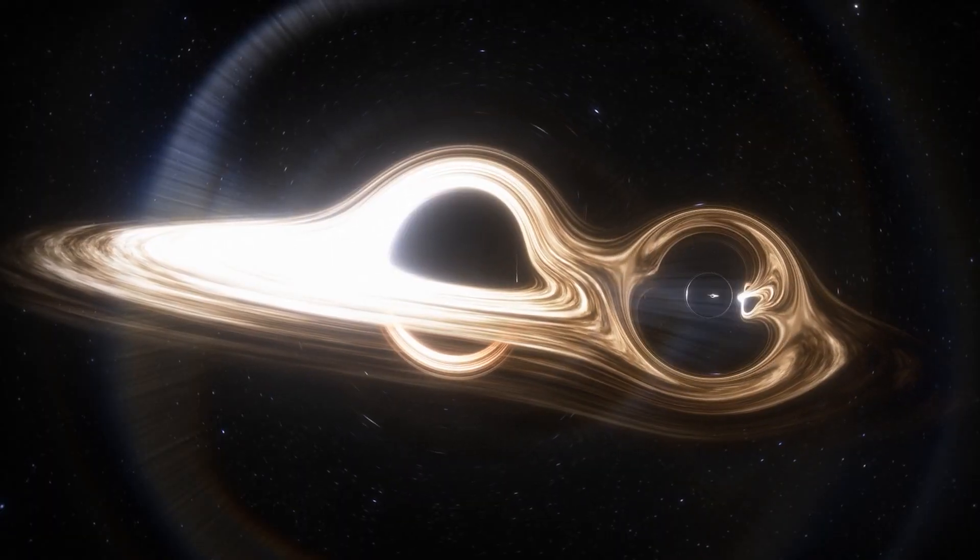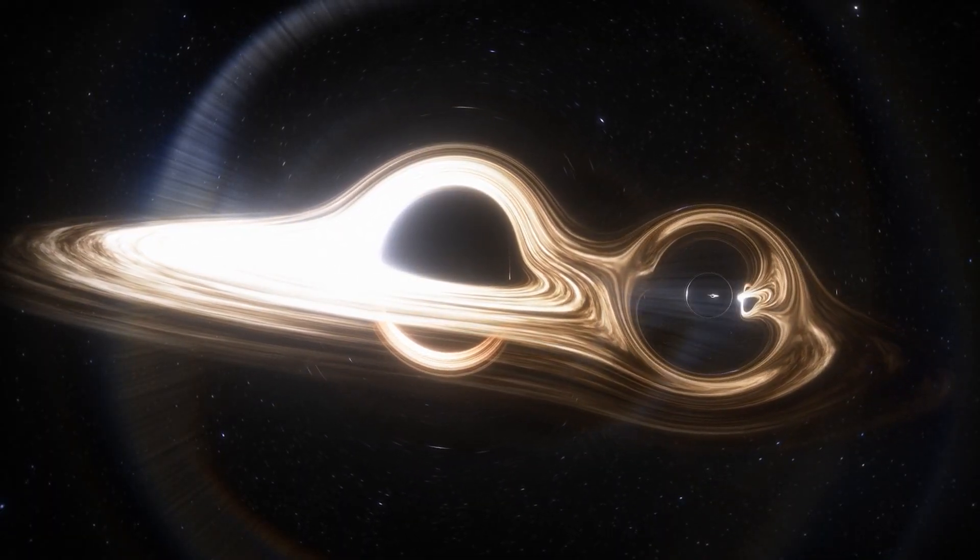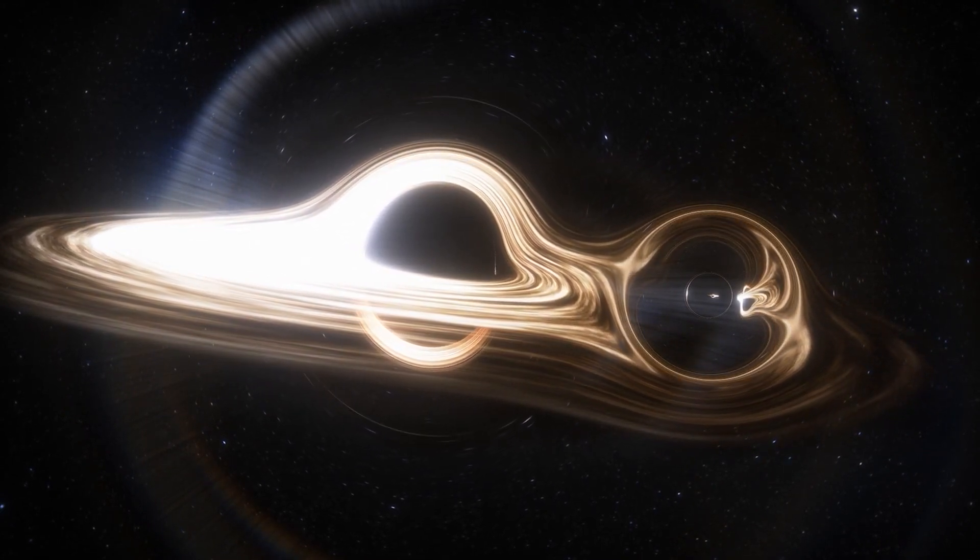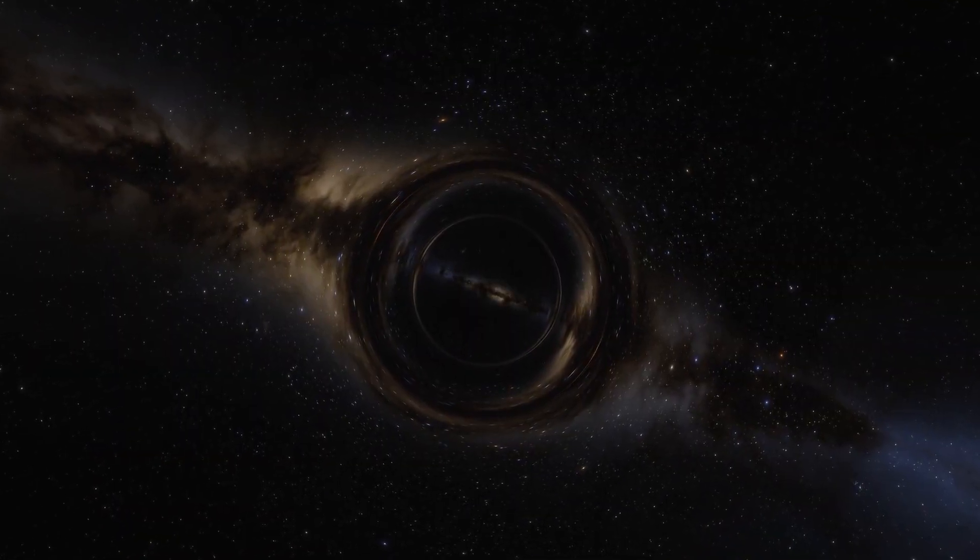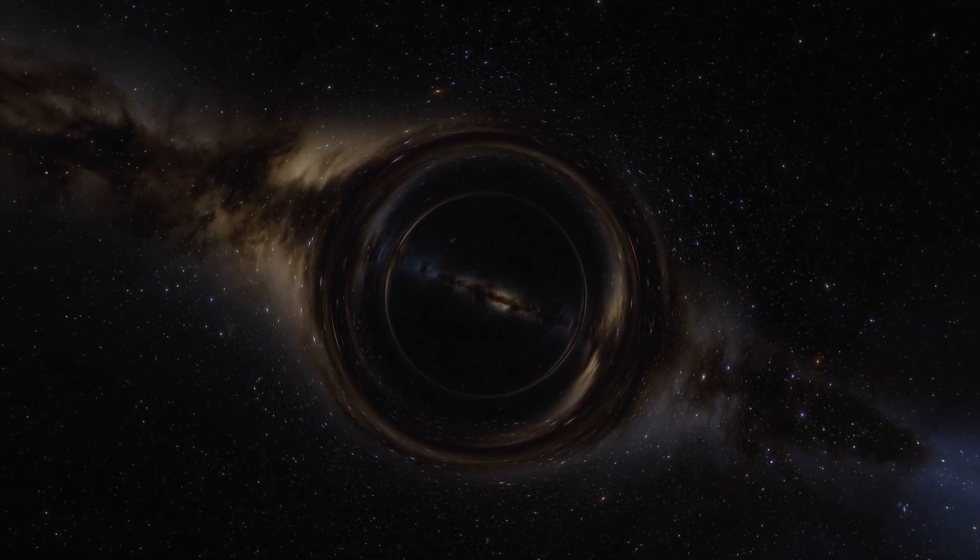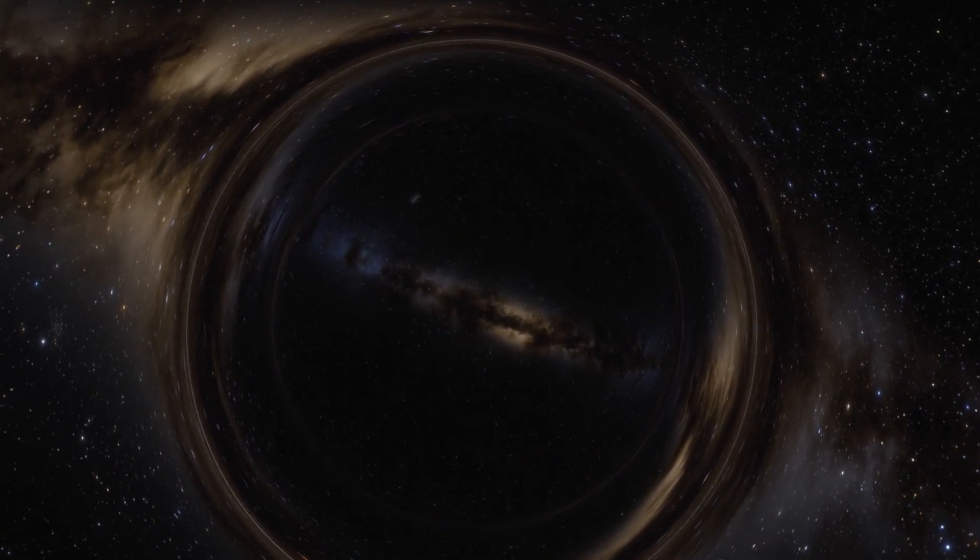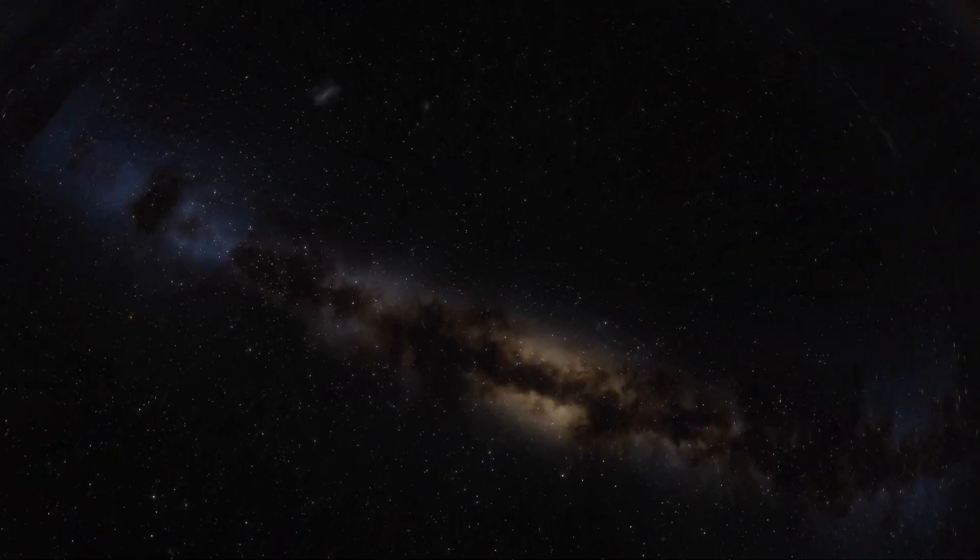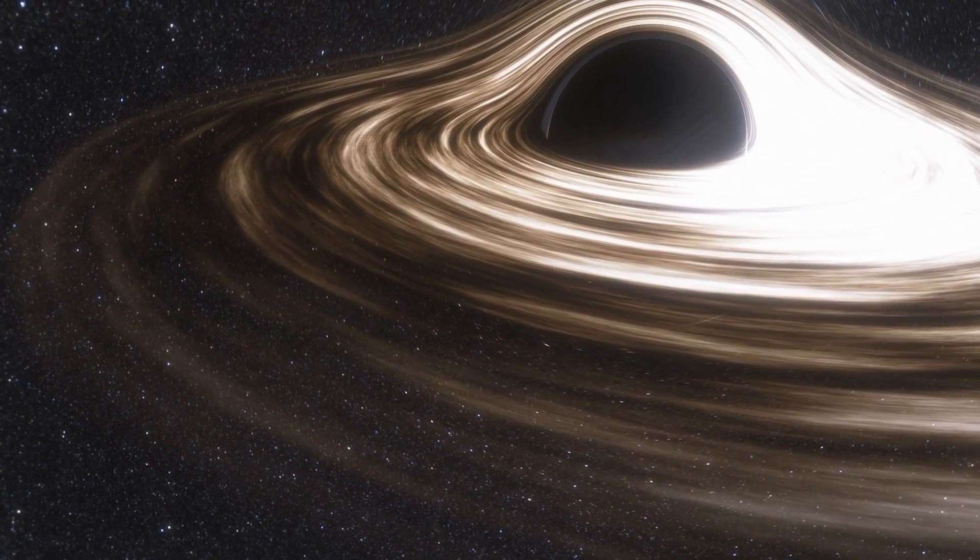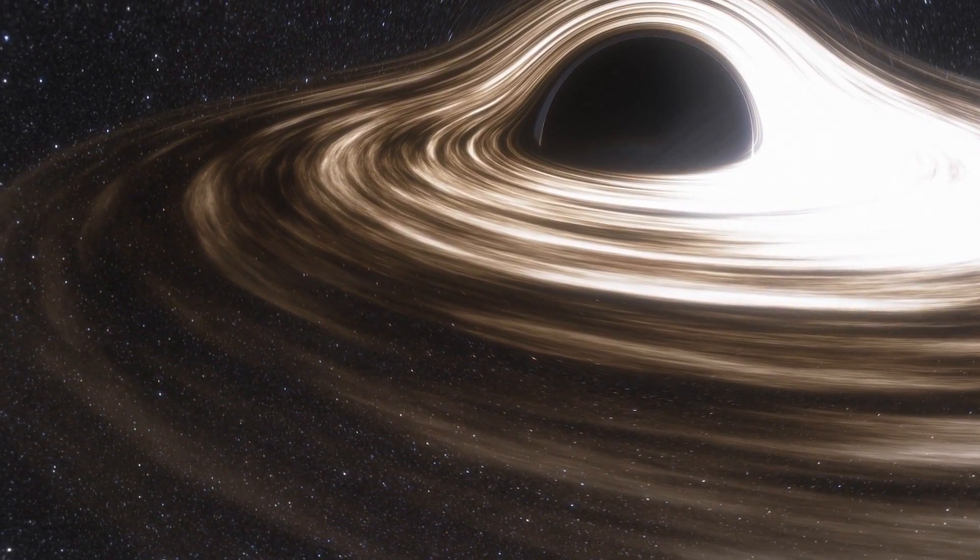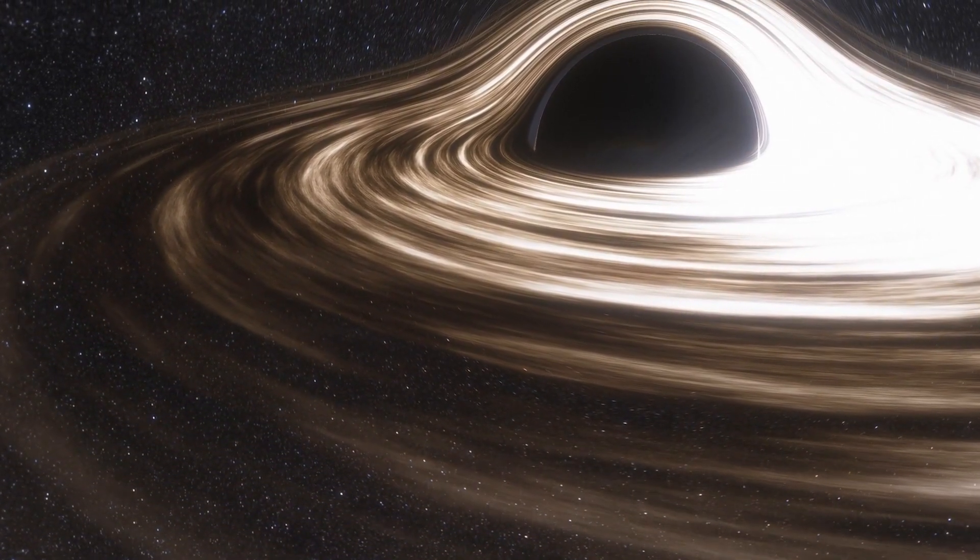The primordial black holes theory proposes that black holes could have formed in the early universe shortly after the Big Bang. According to this theory, fluctuations in the density of matter in the universe could have led to the formation of small dense regions that were capable of collapsing under their own gravity to form black holes. These black holes are thought to have formed from the universe's primordial matter, making them fundamentally different from the more conventional theory of stellar collapse.